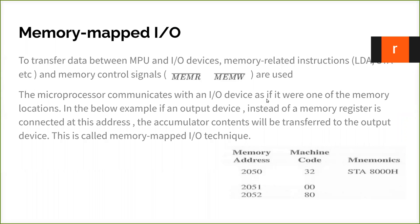In this video we are going to see the memory map I/O library. What do you mean by memory map library? Memory is nothing but primary memory. We have exclusive instructions to access the memory. If you use the same instructions to access the I/O device, then we call it memory map I/O. So to transfer data between microprocessor and I/O devices.